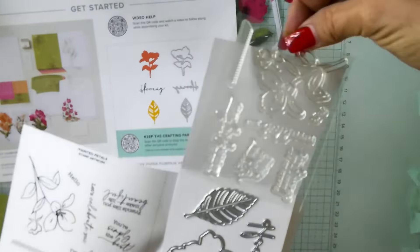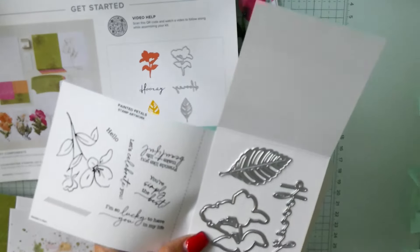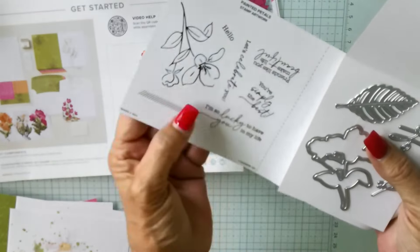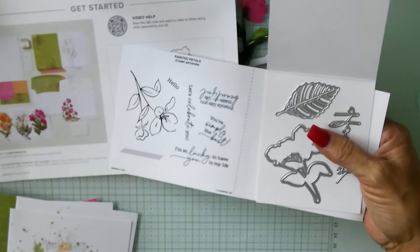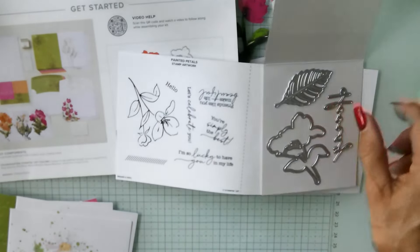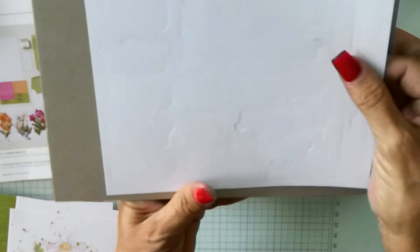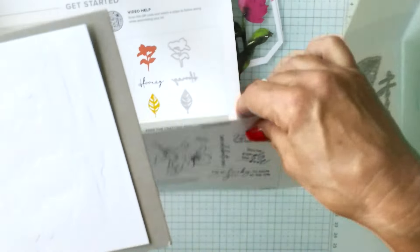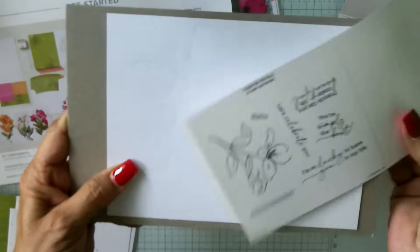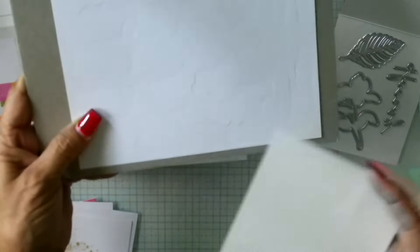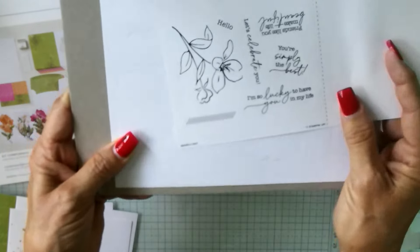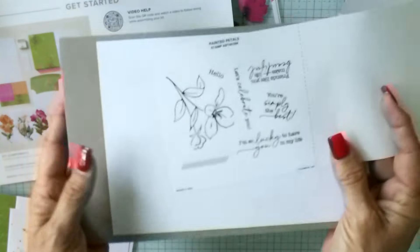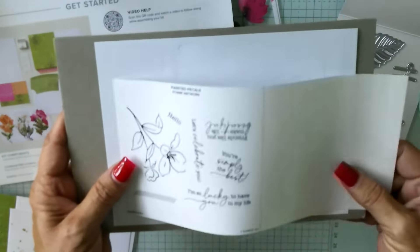You get a leaf coming up for the fall, that little hooray die cut, and then all those five sentiments in that one large image. Those sentiments will fit in those sentiment bubbles. You just stamp it right on there and the edge is perforated and it will punch right out for you.